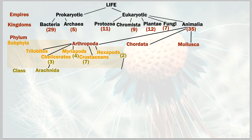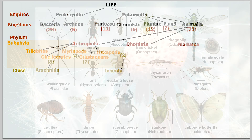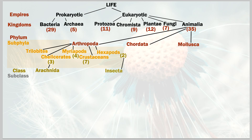Looking at hexapods, the most recognizable class is insecta — insects. They have three body segments and six legs total. Remember: a spider has two body parts and eight legs, while an insect has three body parts and six legs — an easy way to tell them apart.